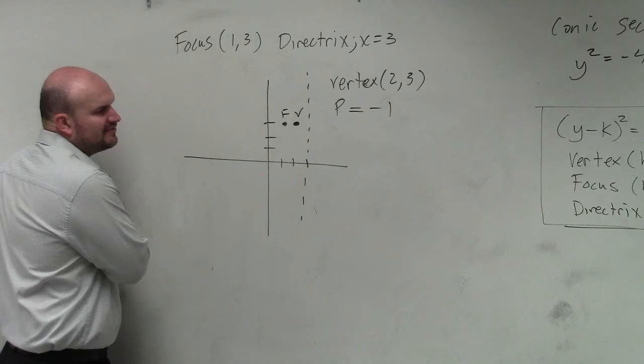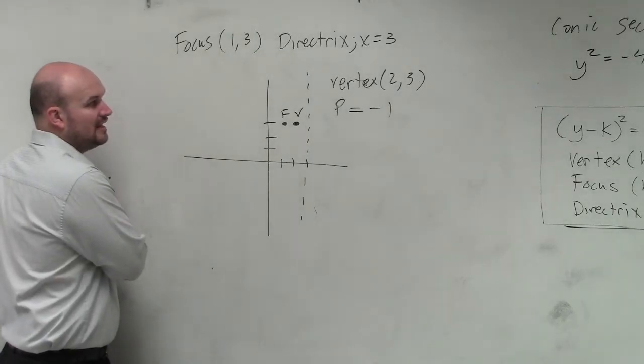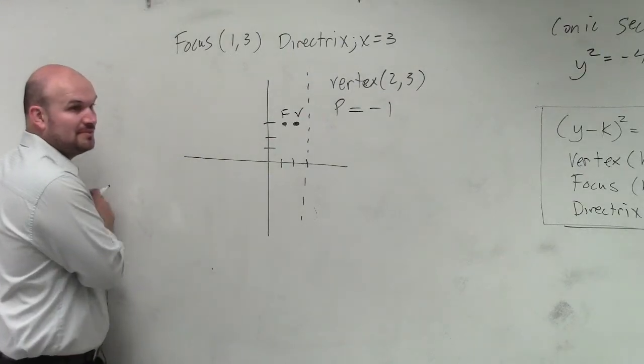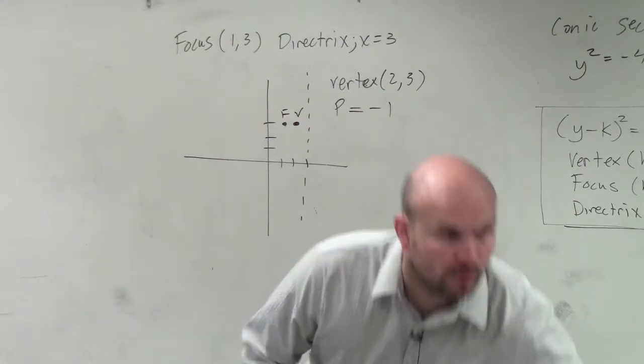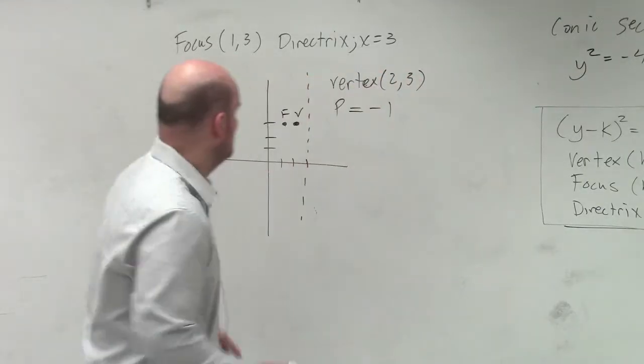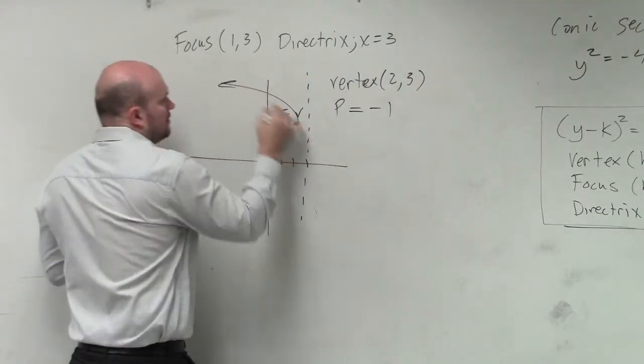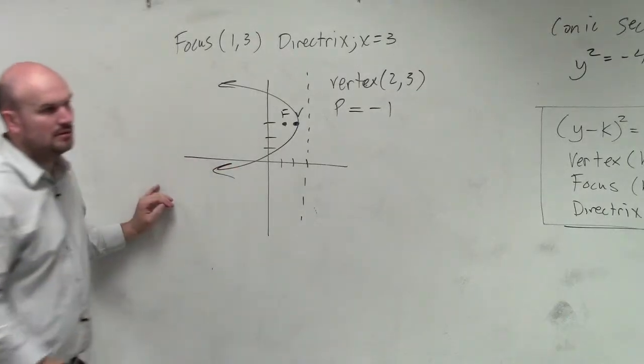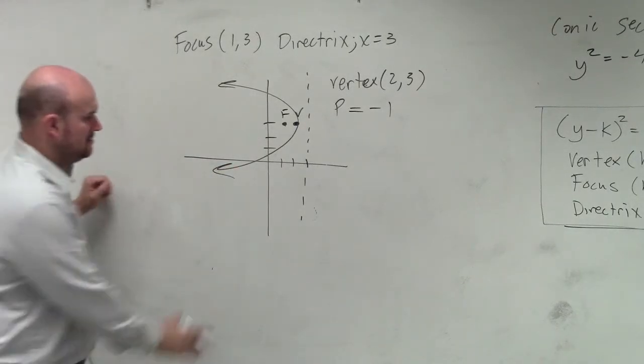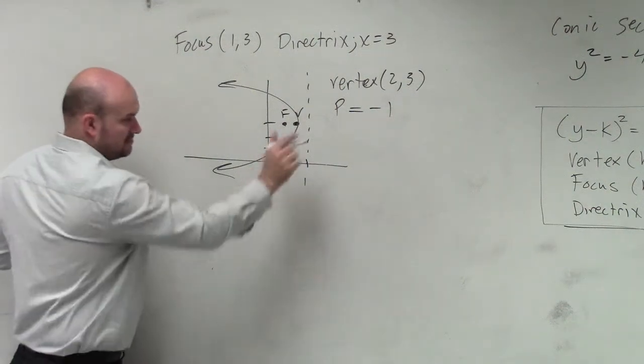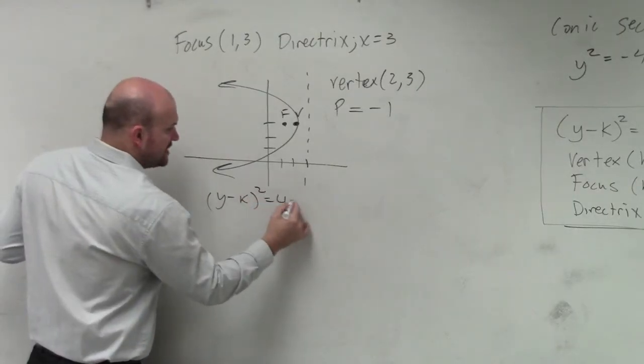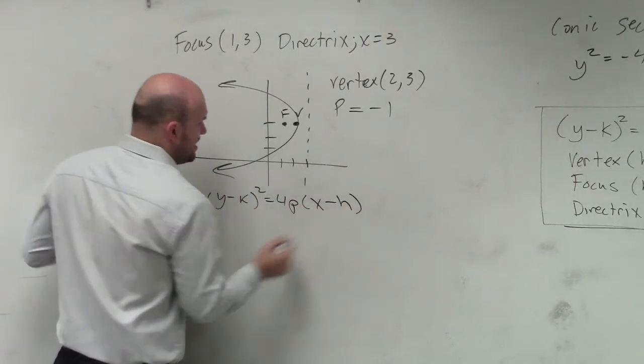Then, what else do we need to figure out? We got p, we got vertex. And oh, well, do we have enough information to know where the graph opens up? The graph always opens up towards the focus. So it's like this. So therefore, which variable should be squared? The y. So y minus k. You do need to have these formulas at least, the general formulas memorized.